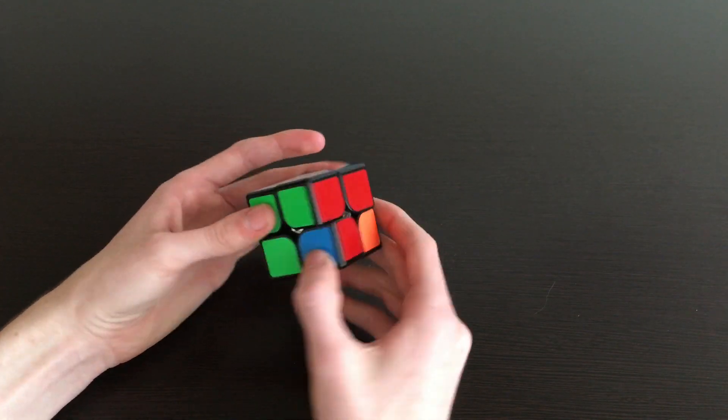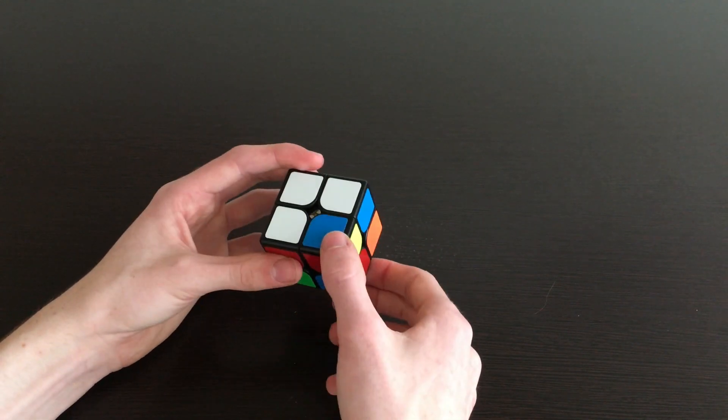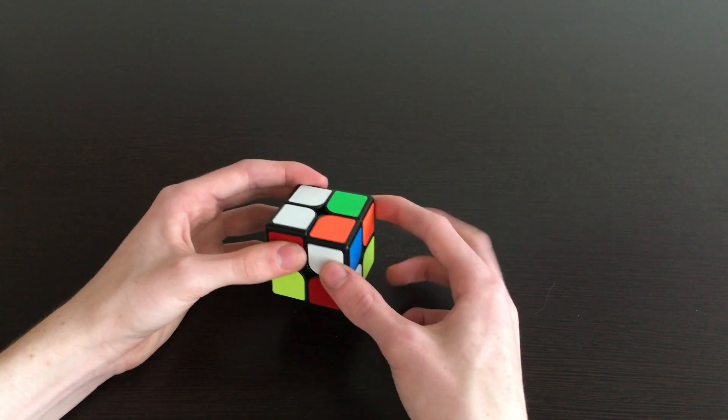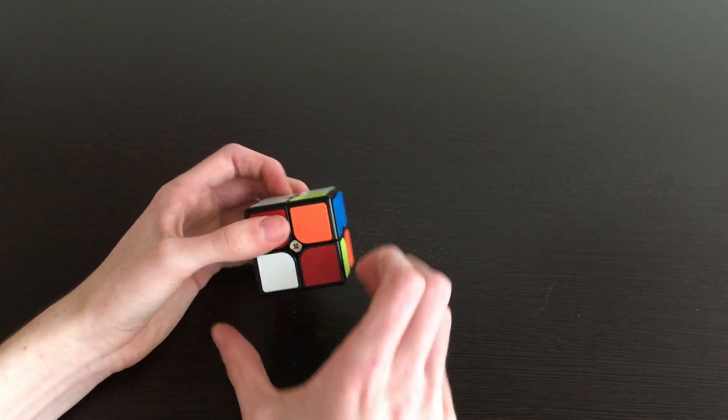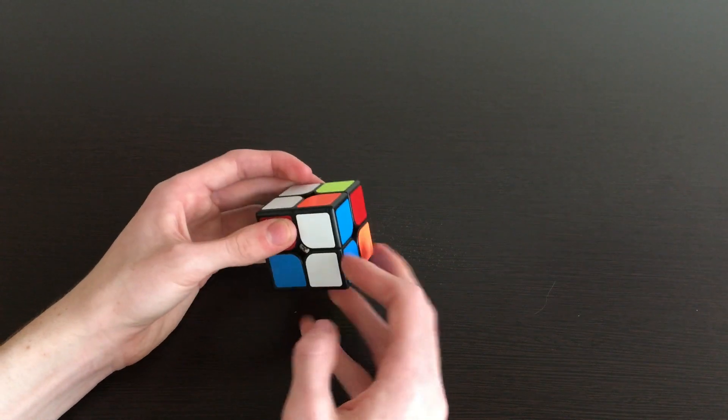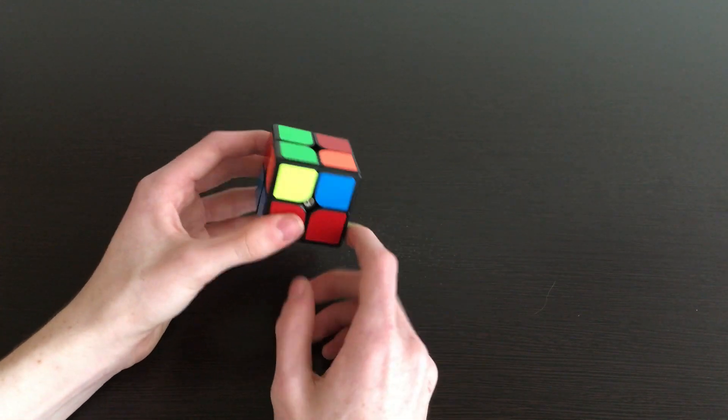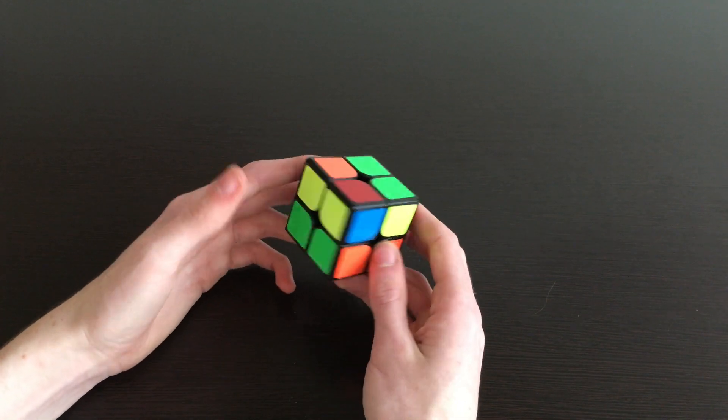From here we have our last corner piece over here. Line it up underneath, turn because it's on the bottom. We're going to turn the right side down, turn the bottom twice, bring the right side back up, bring this underneath. It's over here, turn the right side down, pull it into place, and then bring it right back up. And as you can see, we've already completed the first layer and now we just got to move on to the final layer.